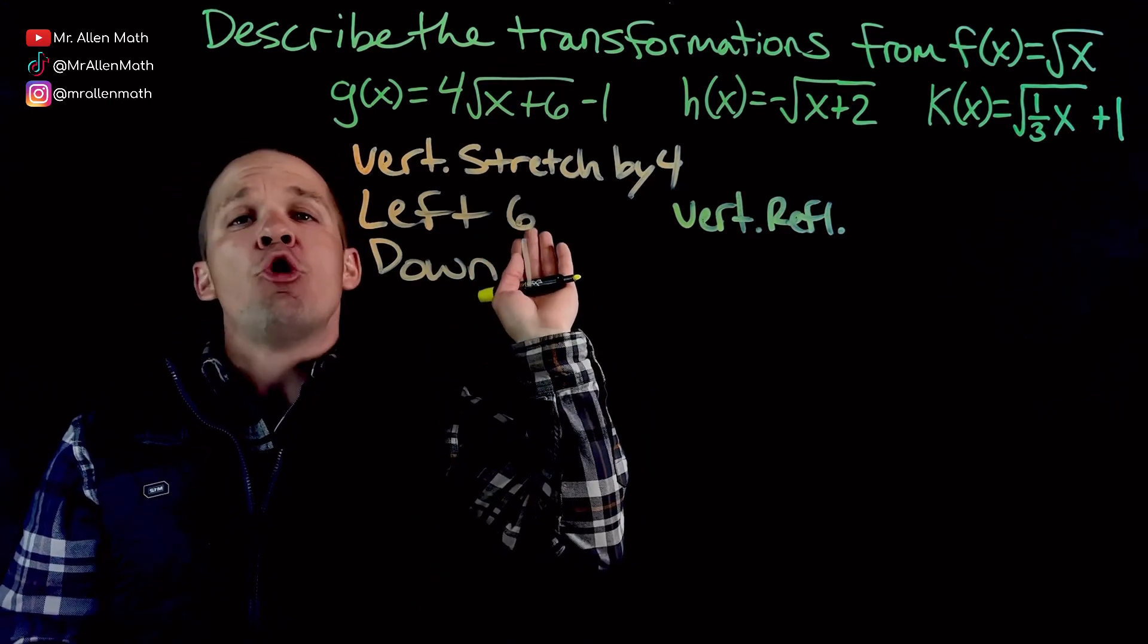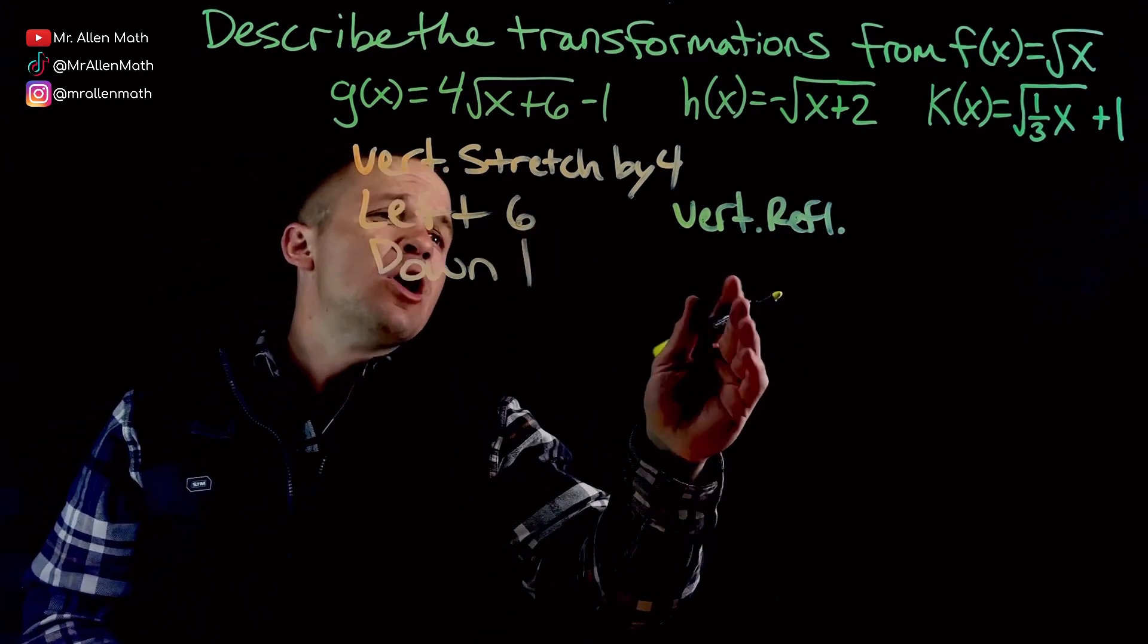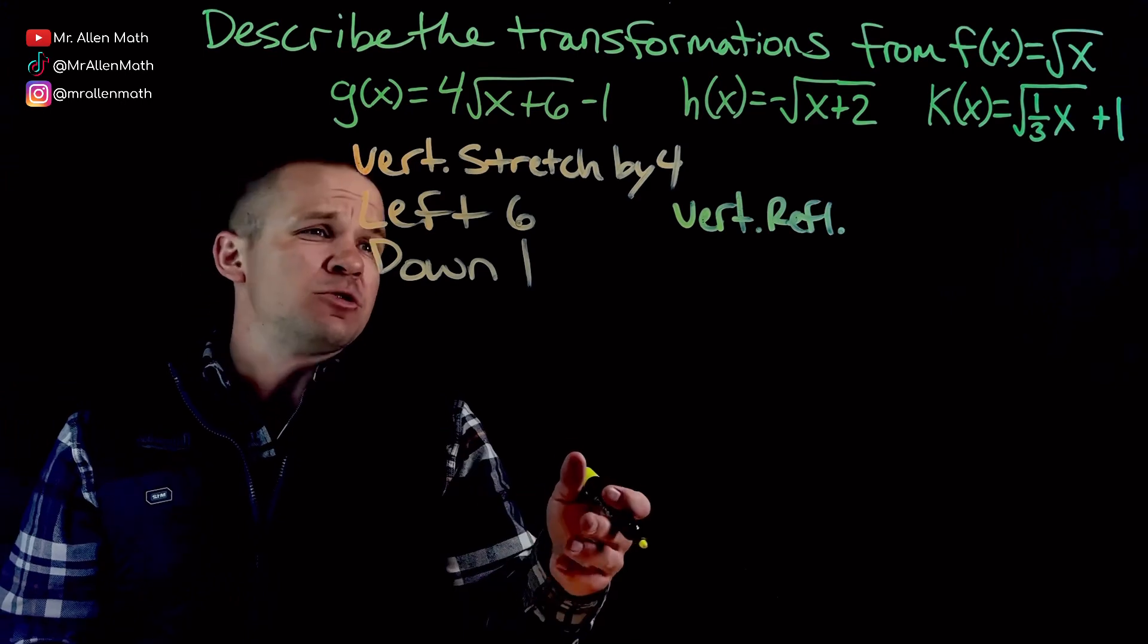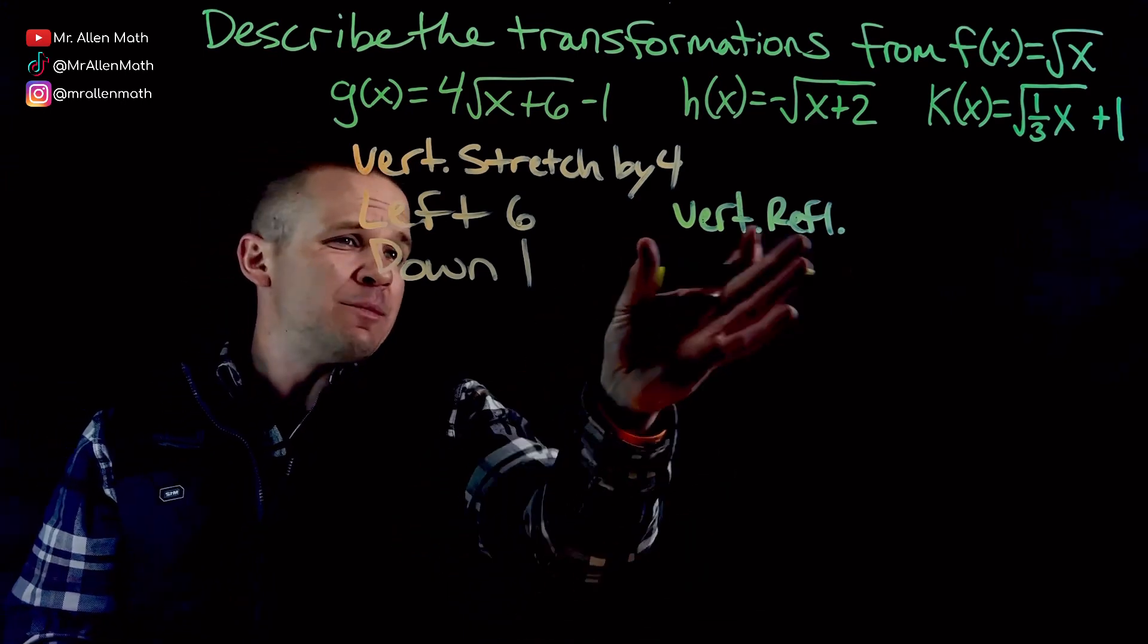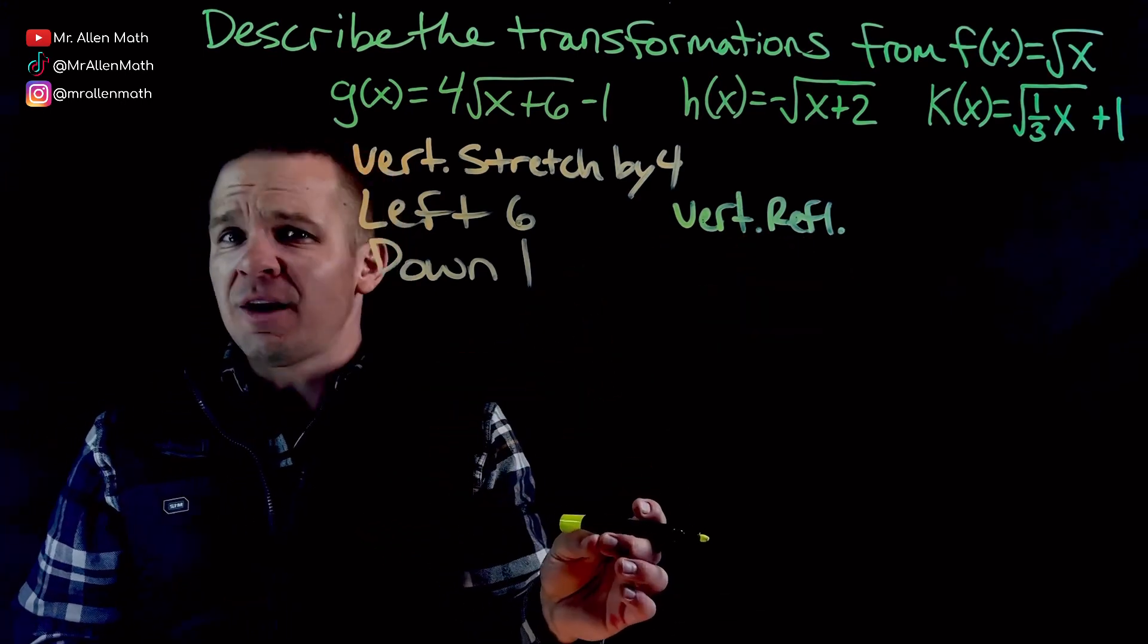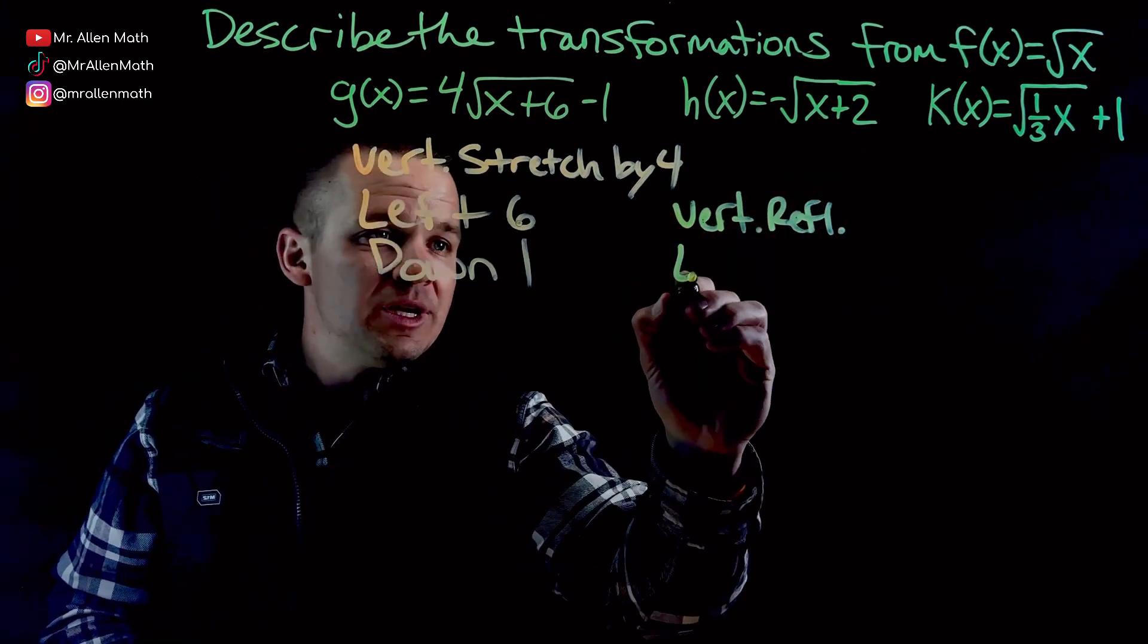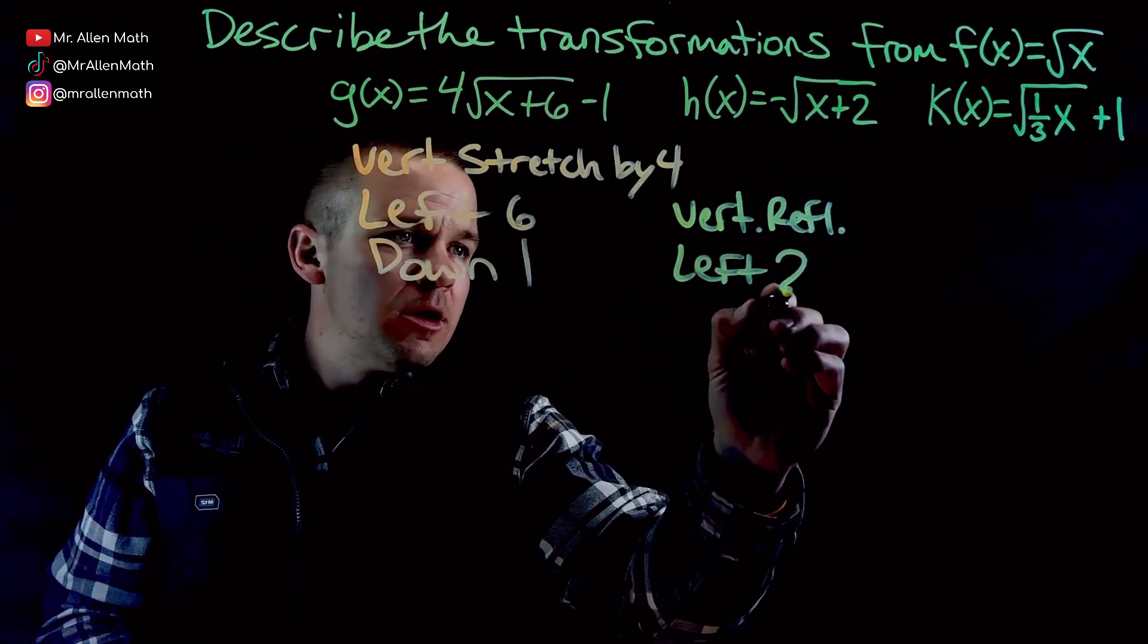You could also say a reflection over which axis? The x-axis. When it's a vertical reflection, it's going over that x-axis. I'm moving my hand up and down, which goes over the horizontal axis. So you can either say vertical reflection or reflection over the x-axis. On the inside, we've got x plus 2. So it is going to the left 2 for this one.